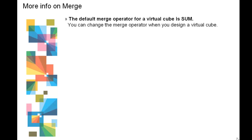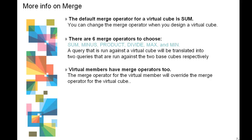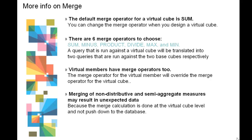The default merge operator for a virtual cube is sum. You can change the merge operator when you design a virtual cube, and there are six merge operators to choose from. A query run against a virtual cube will be translated into two queries run against the two base cubes respectively. Virtual members have merge operators too. If the merge operator for a virtual member differs from the merge operator for its virtual cube, the virtual cube's merge operator will override the virtual member's. Merging of non-distributive and semi-aggregate measures may result in unexpected data, since the merge calculation is done at the virtual cube level and not pushed down to the database.